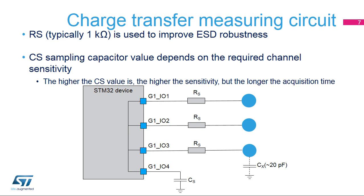The max-count error is useful in preventing an infinite acquisition, which can occur in the event of a hardware failure. The touch sensing controller is active in run, sleep, low-power run, and low-power sleep modes — charge transfer acquisition can only be performed in these modes. In all other modes — stop 0, stop 1, stop 2, standby, and shutdown — the touch sensing controller is not operational. In stop modes, the peripheral is frozen but register content is kept. In standby and shutdown modes, register content is lost and the peripheral must be reinitialized.